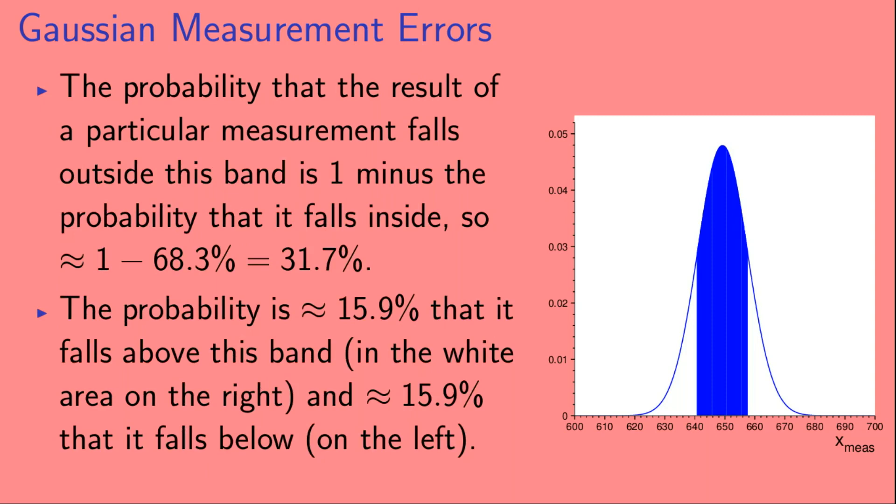Now, the probability that the result of a particular measurement falls outside this band is 1 minus the probability that it falls inside. So 1 minus 68.3%, which is about 31.7%. The probability is approximately 15.9% that it falls above this band, in the white area on the right, and approximately 15.9% that it falls below, in the white area on the left.